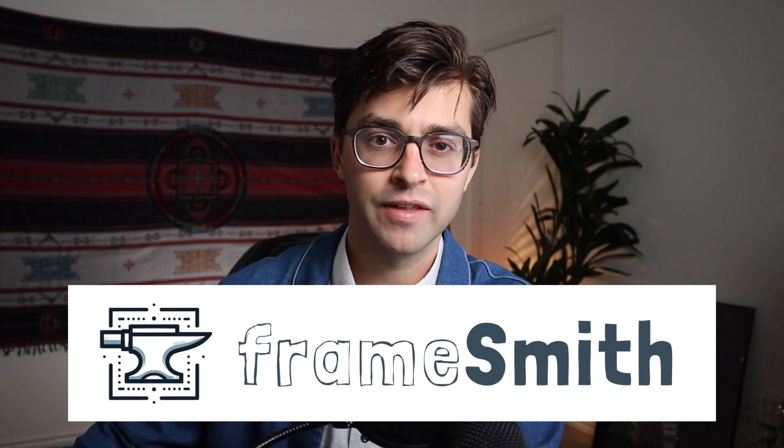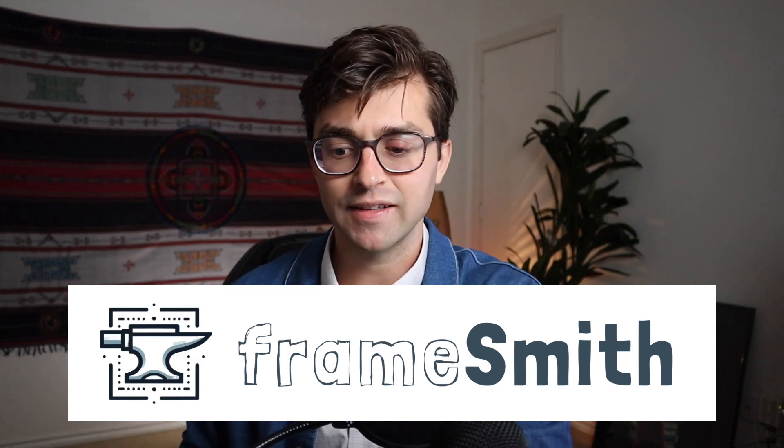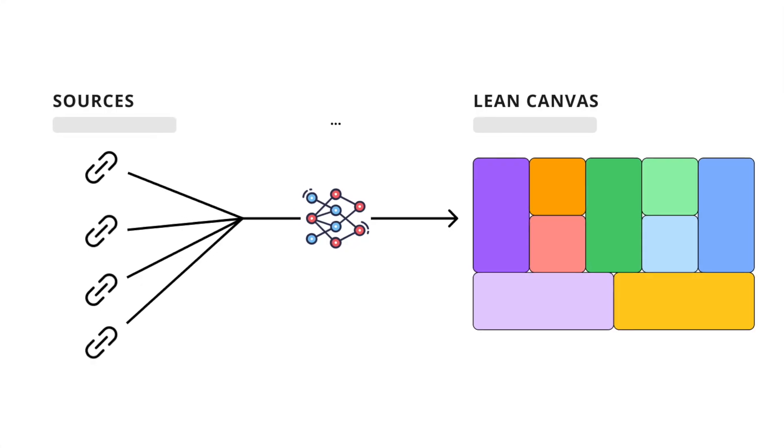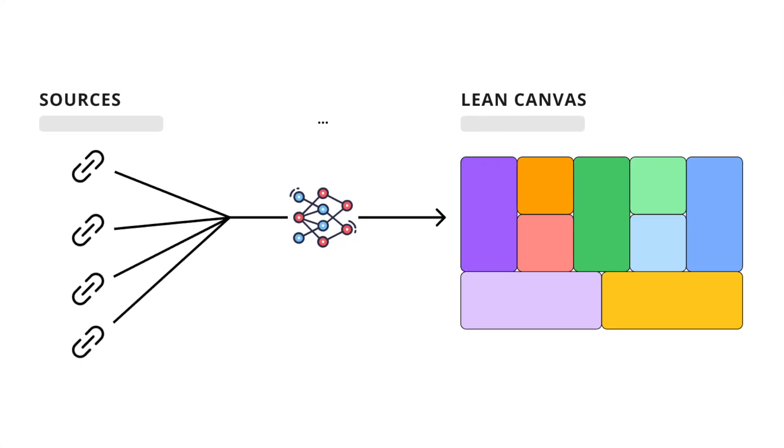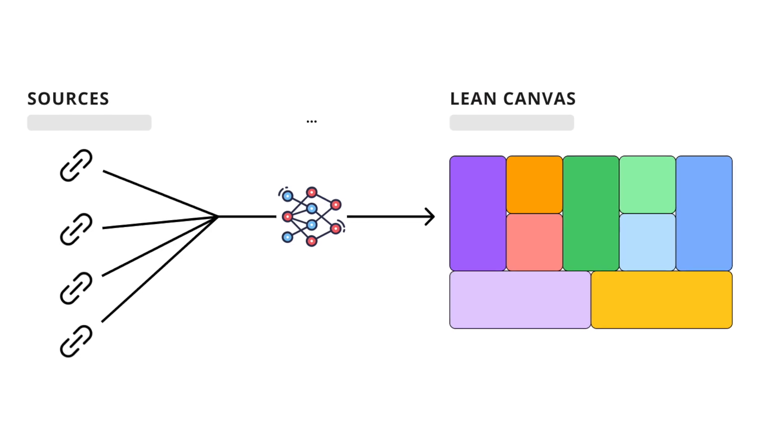The problem is that it takes me five or ten hours to create a lean canvas per startup, so this was going to be too much effort. This is why I created an open source tool called Framesmith that takes raw information on a company and converts it into a lean canvas in several minutes using AI.